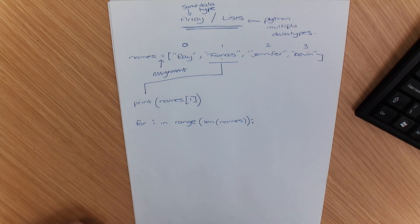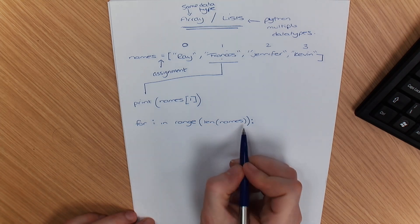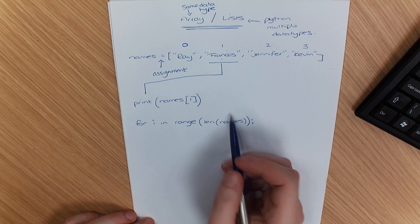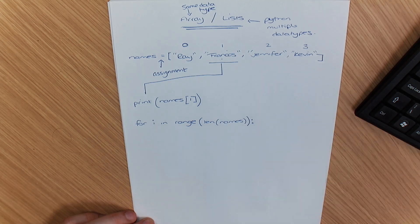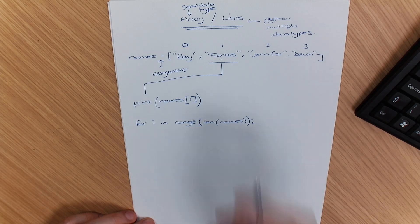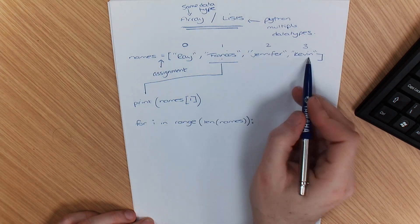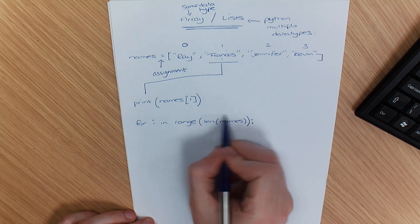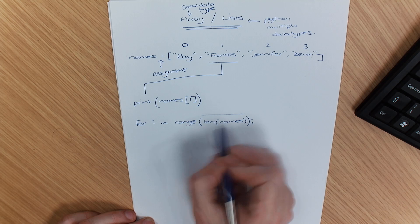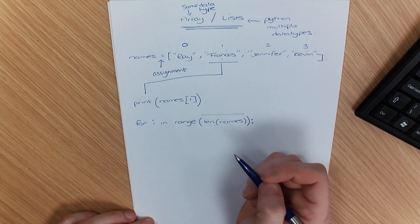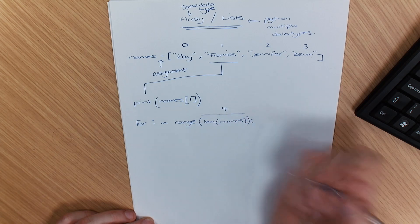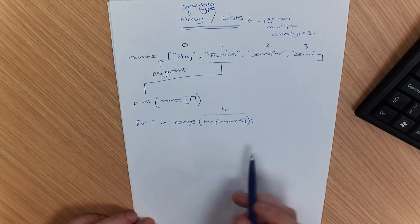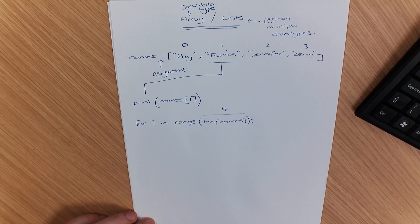Now what that's going to do is it's going to iterate through the whole list. The other way you could do it, instead of having LEN names there, what else could I have done? Yeah. So what would I put in there with this list? Yeah. But what, if I was just using a number, what would I put above it? Yeah. So I'd just do four because that would increase it four times.